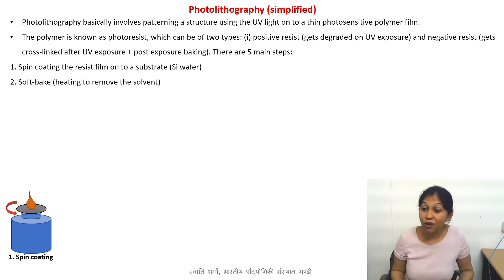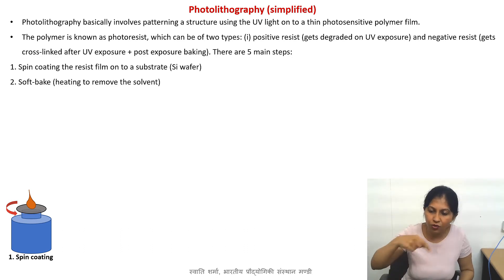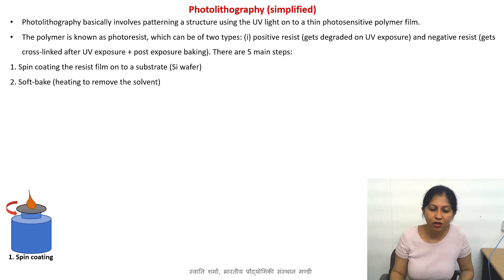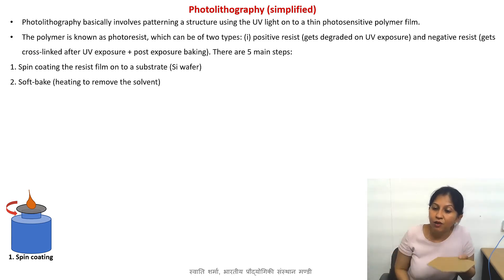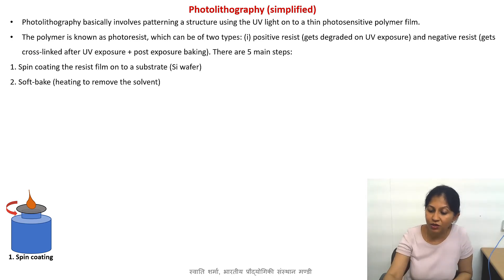The second step is soft baking. Soft baking means you heat your polymer to remove the solvent present in it and also to slightly make your film uniform. Sometimes there are height differences or air bubbles trapped, and generally when you heat it a little bit it becomes a more uniform and flat film. This step is done for all resists because it also ensures that when you place a mask on top of your polymer film, the polymer does not damage the mask. If there is a lot of solvent in it, it's very soft and will damage your mask, which is typically very expensive.